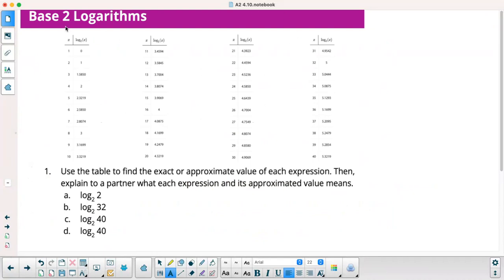So here's a table. This time we were using base 2. If you watched my video from 4.9, we used base 10. So here's my table here. Some of these are whole numbers. This is log base 2 of x. So if x is 32, it's like log base 2 of 32. So what would that equal? 2 to what power gives you 32? And the answer is 5.